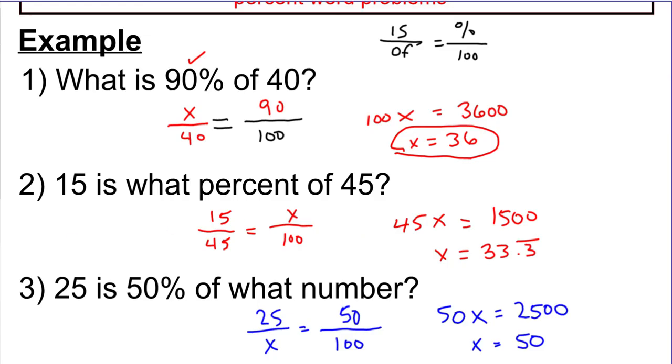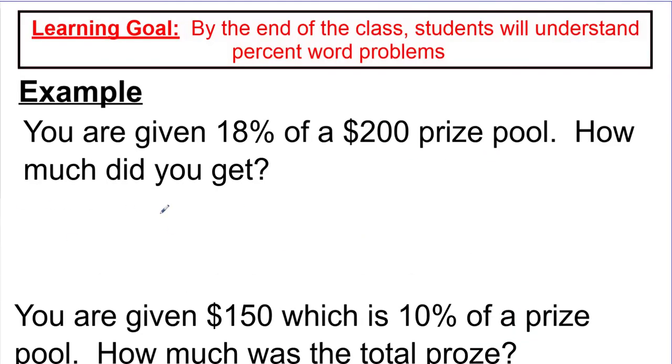So let's finish up by looking at some other word problems. And so this is taking it into a context. We're not just thinking about is and of, but it kind of all falls into the same type of thing. So it says you're given 18% of a $200 prize pool. How much money did you get? So we're going to set up is over of equals percent over 100.